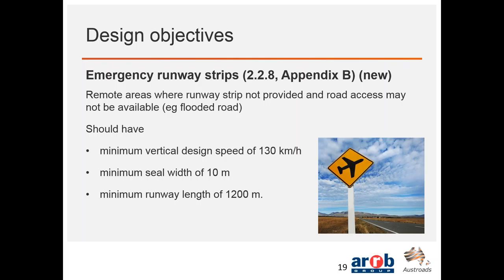There is a brand new section in the guide called Emergency Runway Strips, covered briefly in Section 2.2.8, with a new Appendix B providing related information. These are really for remote areas where a runway strip has not been provided and road access may not be available. Key criteria include a minimum vertical design speed, a minimum seal width, and a minimum length — this is an entirely new section in the guide.